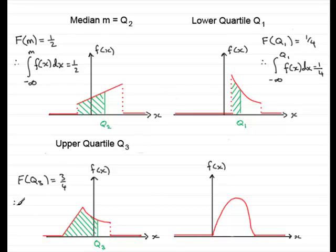Or you could say that the integral from the lower limit of the probability density function minus infinity to Q3 of f(x) dx. Well, that's going to equal 3 quarters. And you'd solve that equation.